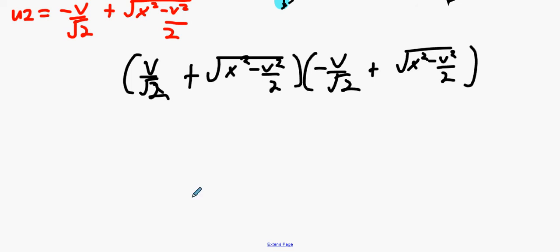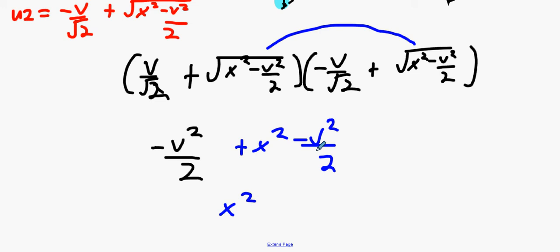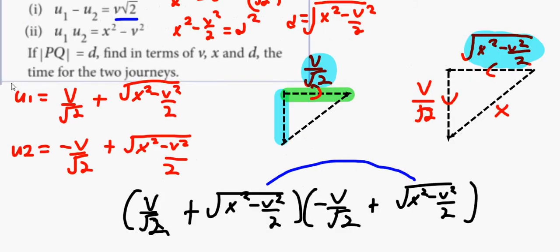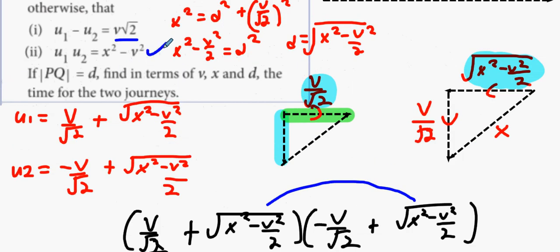So what's it going to be? It's going to be V over root 2 multiplied by V over root 2, which is minus V squared over 2. And then I've got to multiply the two of these by each other, which means essentially remove the square root sign. So it's going to be x squared minus V squared over 2. Then you have a half V squared minus another half V squared, which is x squared minus V squared. Is that what I was asked to do? Yes, it was. Happy days.